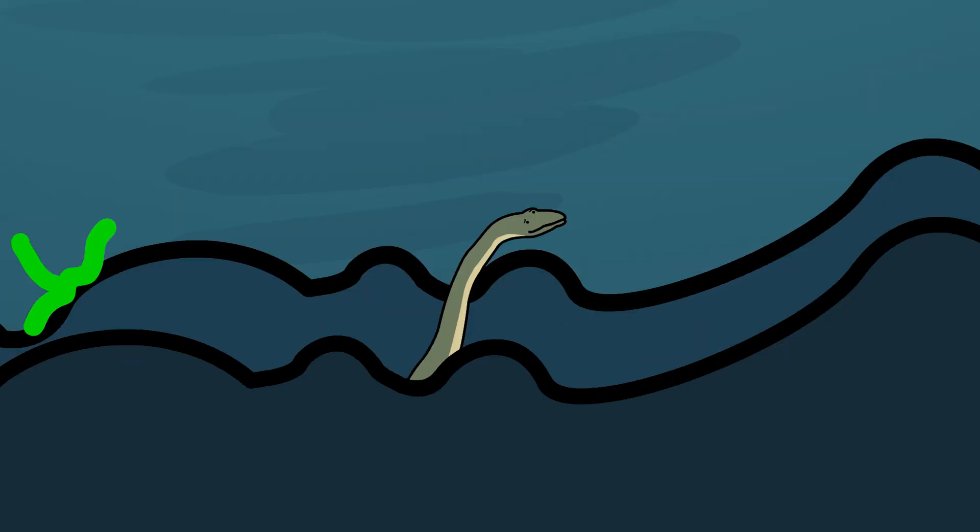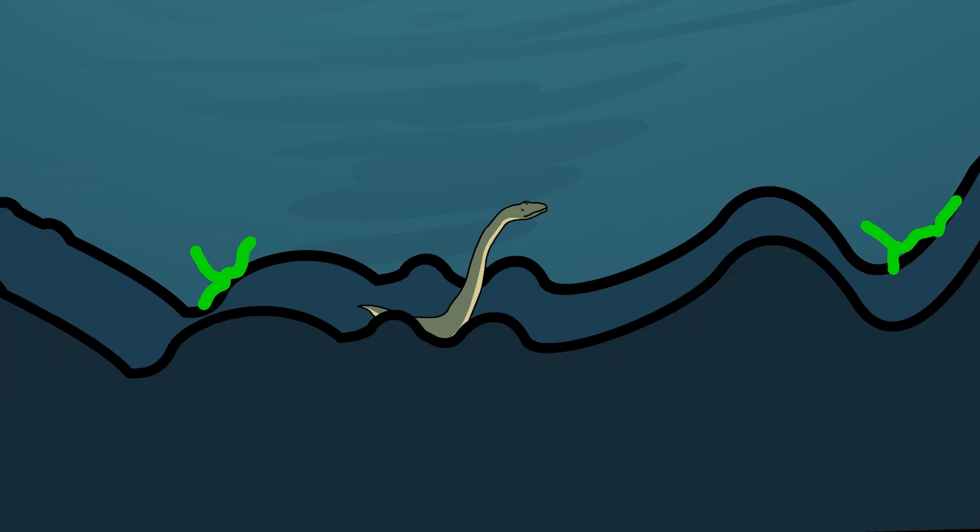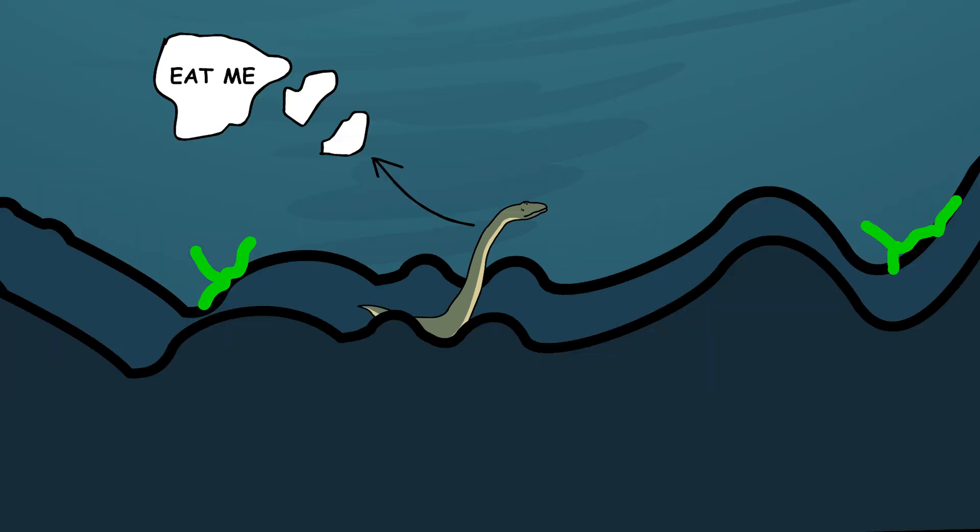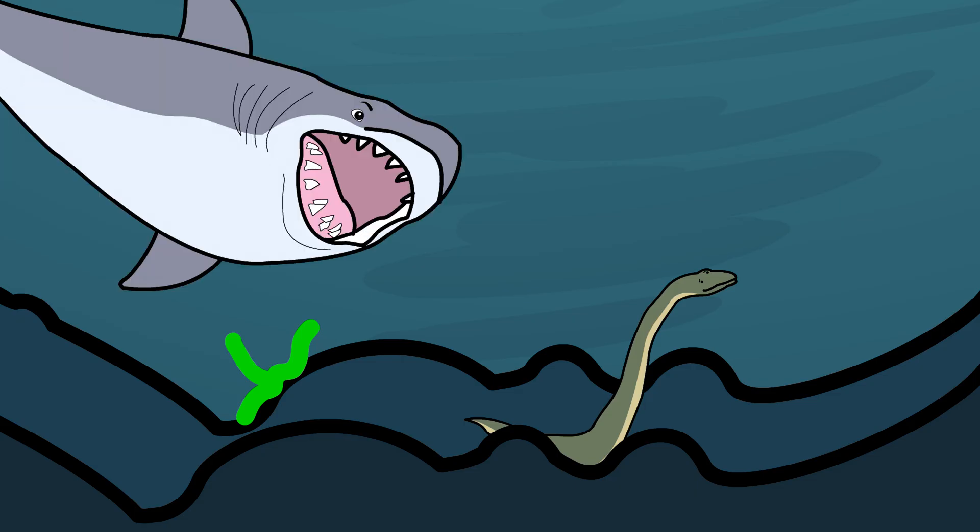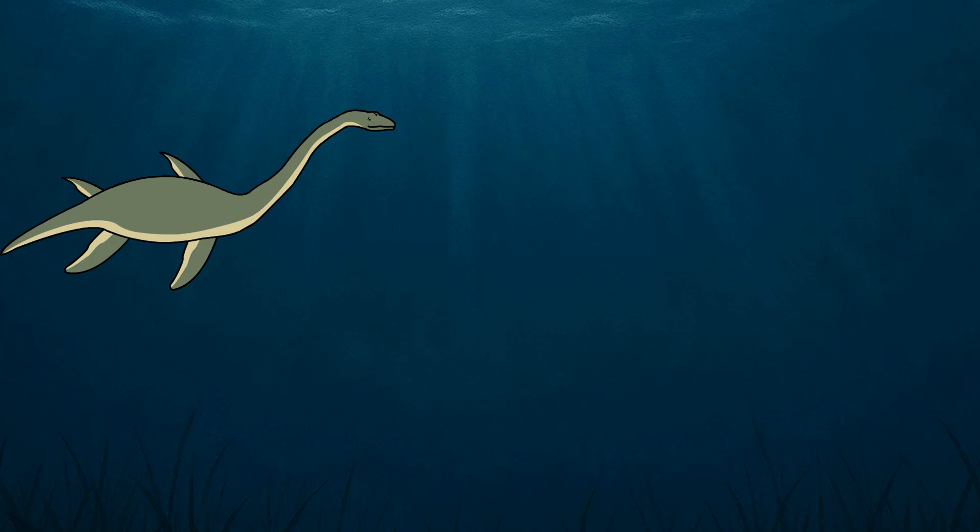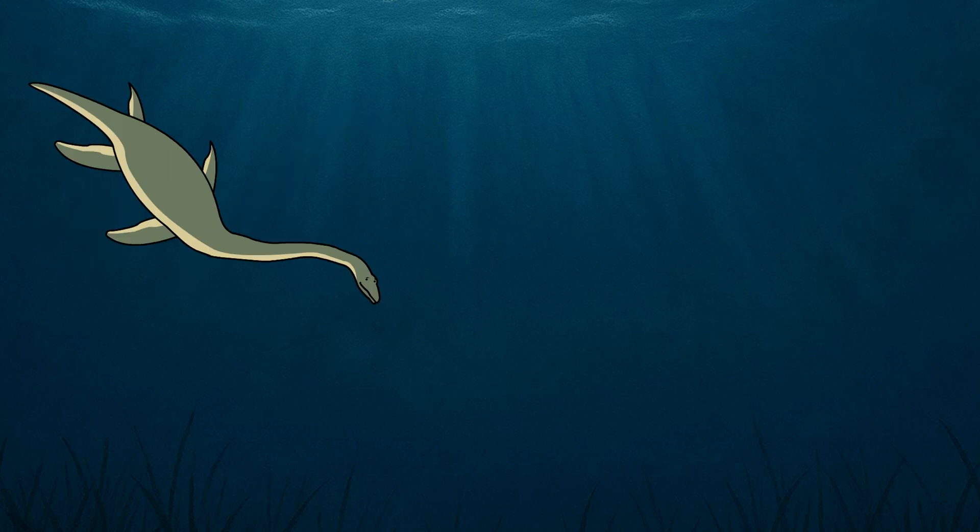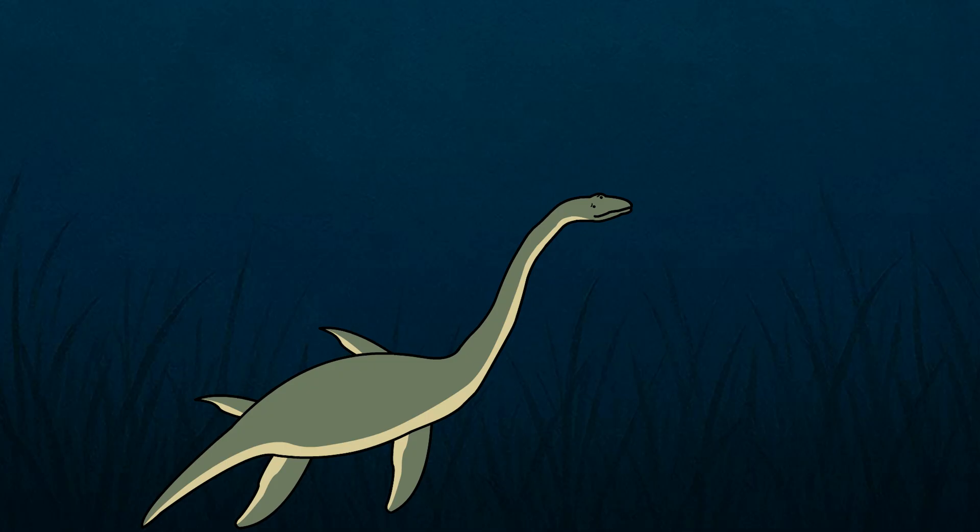But that's not easy. You're built long, not fast. That neck is basically a neon eat-me sign waving through the water. Any fast-moving predator could snap your neck like a breadstick. So you do what you can: drift low, stay quiet, and wait for the right time to eat.